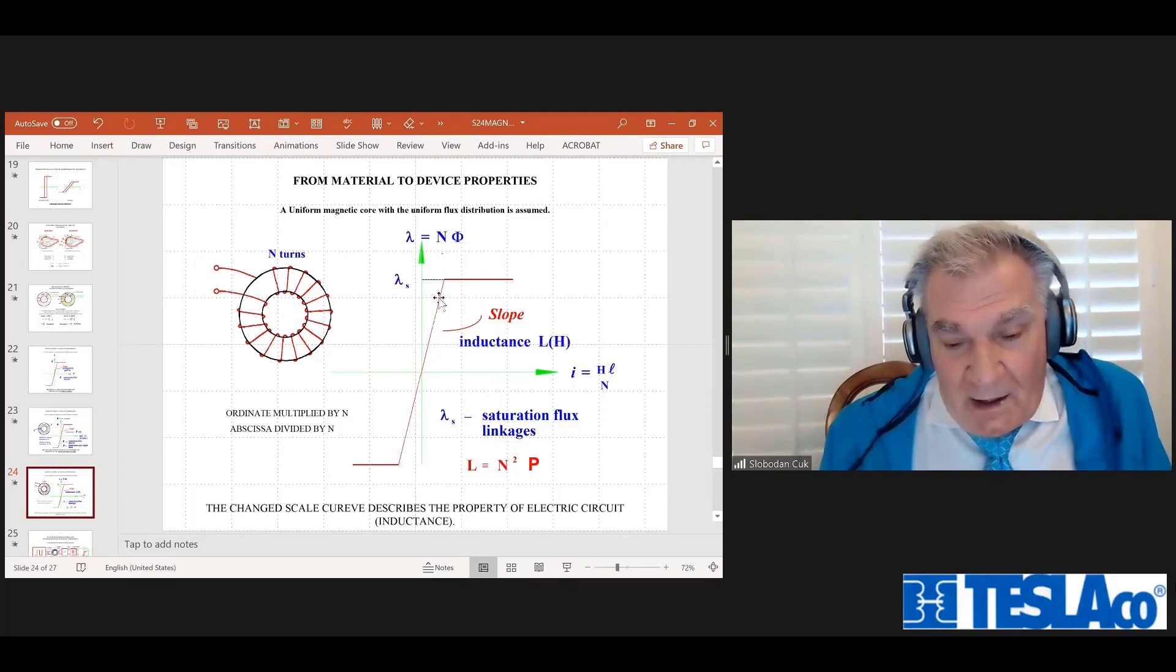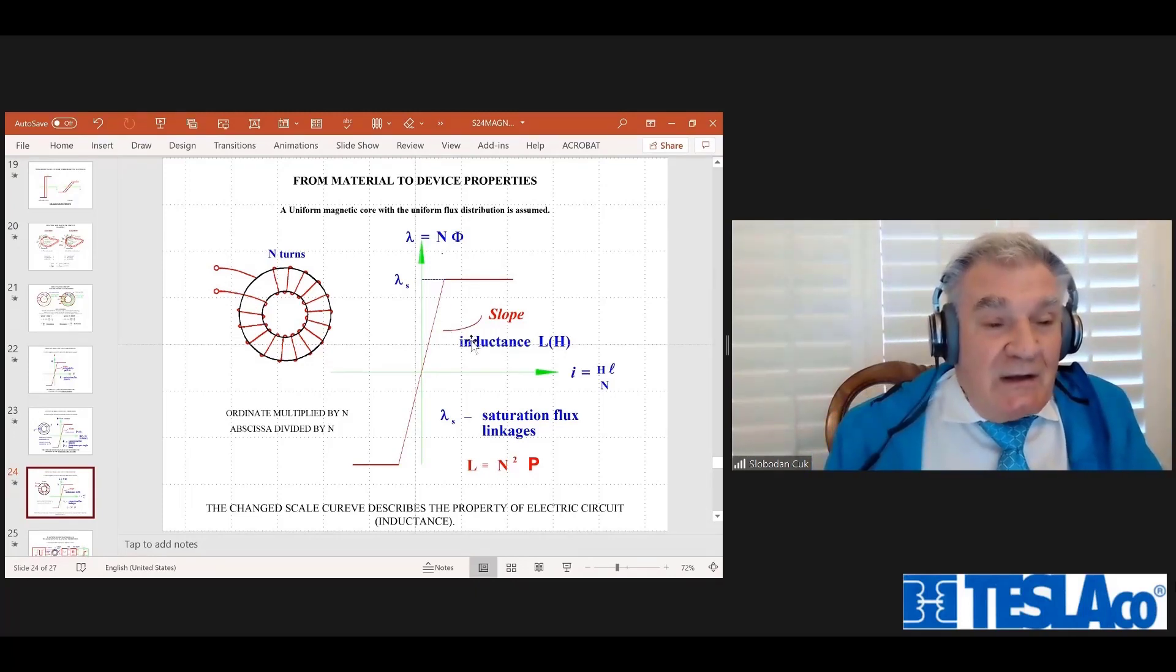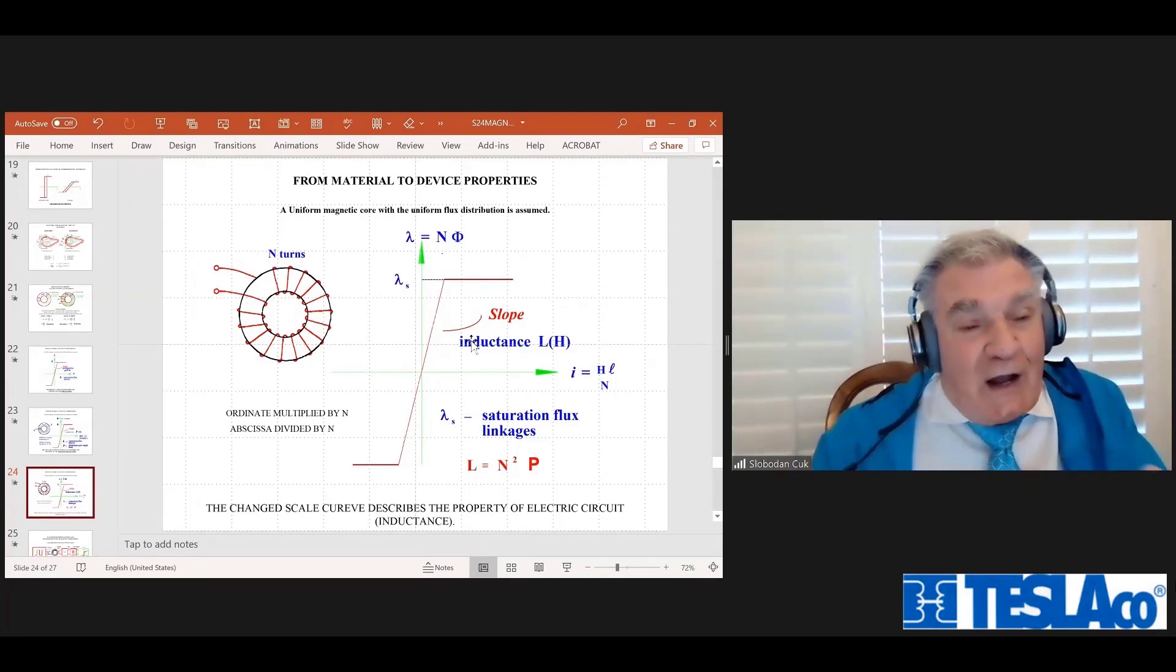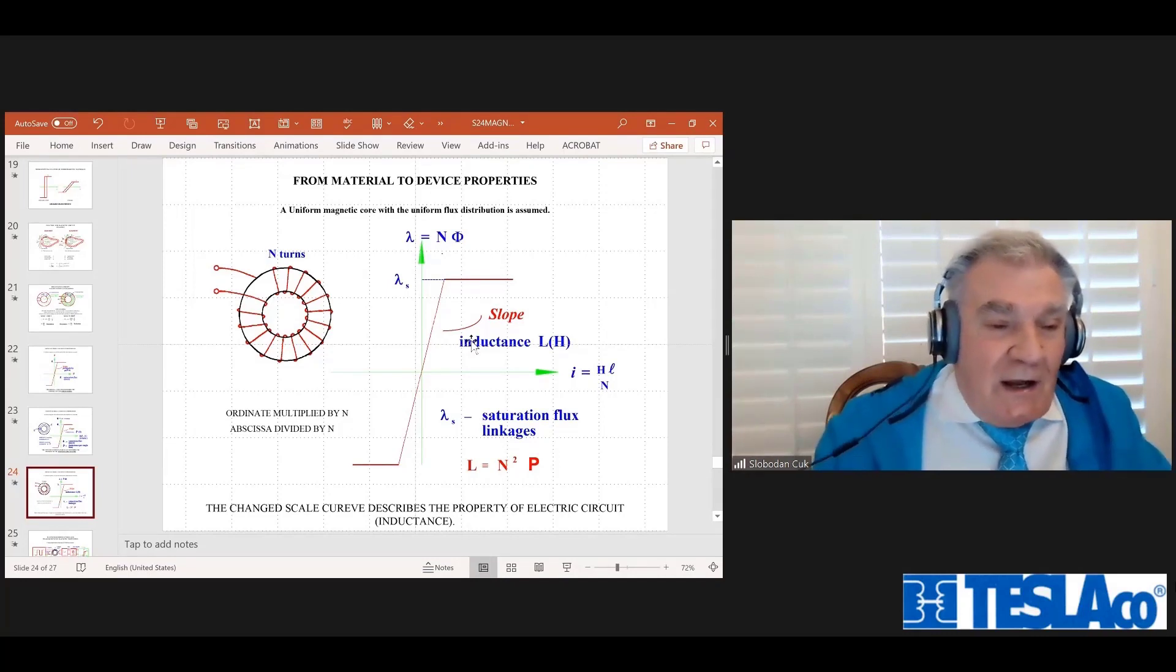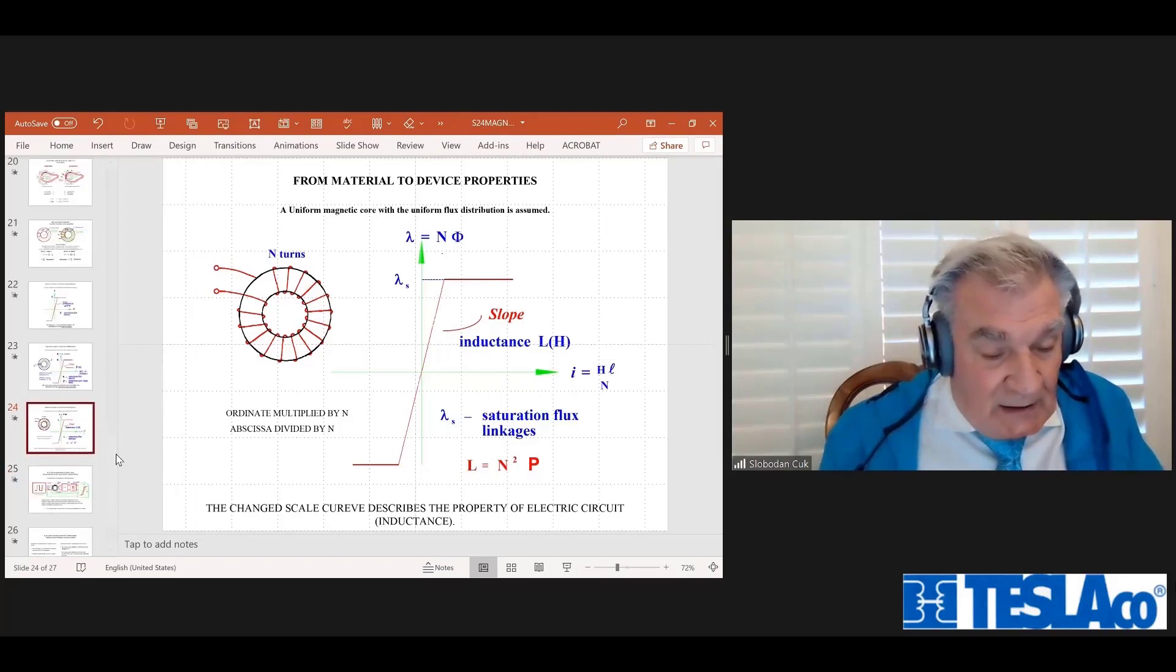So what happens with my characteristic? My characteristic changes from flux linkages, from flux to ampere-turns characteristic. I multiply vertical coordinate with the number of turns that I used in this device and divide this horizontal coordinate by number of turns. Of course, what's going to happen with this slope? It's going to increase with the number of turns squared. Multiplying one and dividing the other one, so the slope is going to go N² times that. Of course, N² times permeance. So that's what you say. Permeance is inductance per single turn and multiplied by number of turns squared, you get a huge increase of inductance.